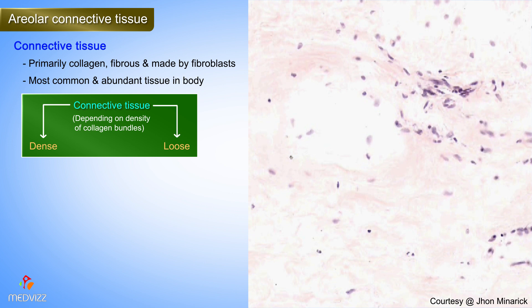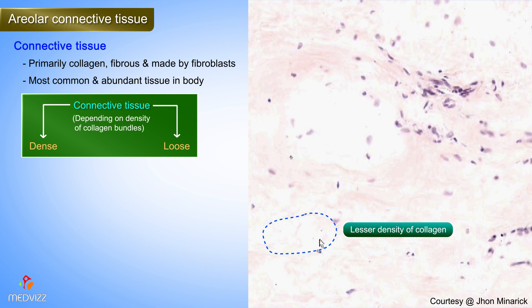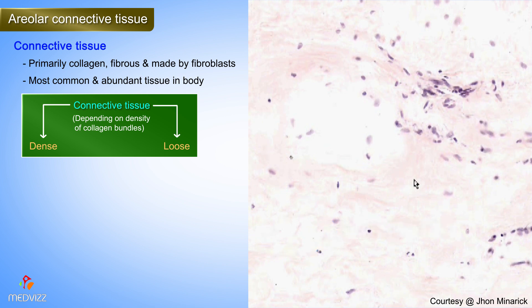Connective tissue can be loose or dense depending on the density of the collagen bundles. An area that is pinker would have a greater density of collagen bundles, versus an area which is lighter, which would have a lesser density. If the connective tissue was very loose, you may often see it interspersed with soft yellow adipose tissue as well.